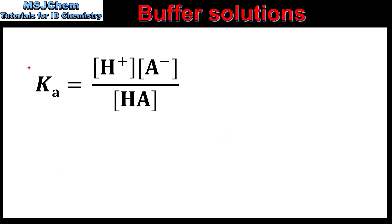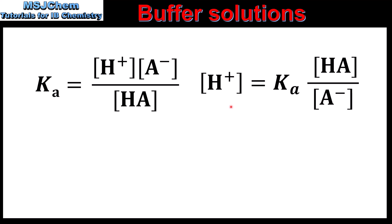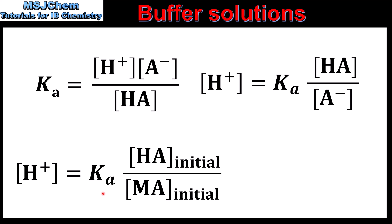Next we look at how to derive the expression for calculating the pH of a buffer solution. We start by writing the Ka, which has the concentration of the hydrogen ions and the conjugate base in the numerator and the concentration of the weak acid in the denominator. We then rearrange the Ka expression to solve for the concentration of hydrogen ions: [H⁺] = Ka × [weak acid] / [conjugate base]. These are equilibrium concentrations, and the equilibrium concentration of the weak acid equals its initial concentration, while the equilibrium concentration of the conjugate base equals the initial concentration of the salt.